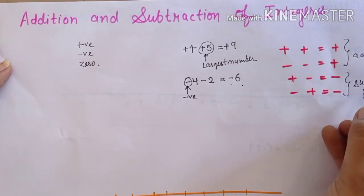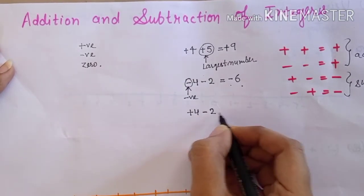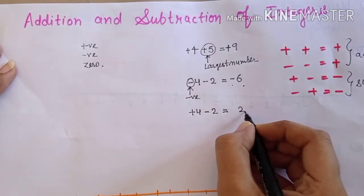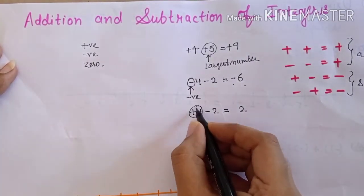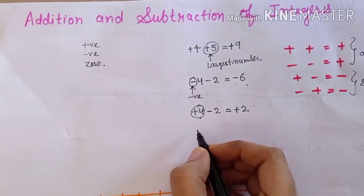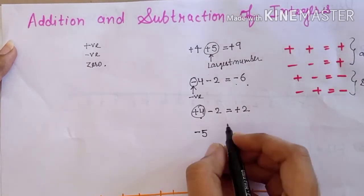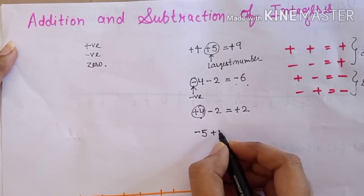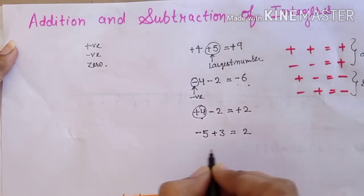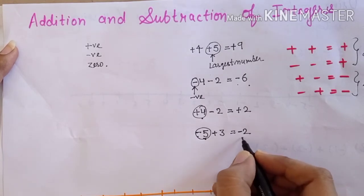Next — subtract कैसे करेंगे जब different sign हो। Suppose plus 4 और minus 2। हम 4 में से 2 subtract करेंगे: answer 2। Sign largest number का — यहाँ largest 4 है, sign plus — so answer plus 2। Similarly, suppose negative 5 और positive 3। Subtract करेंगे: 5 minus 3 = 2। Largest number 5 है, sign negative — so answer minus 2। Clear?